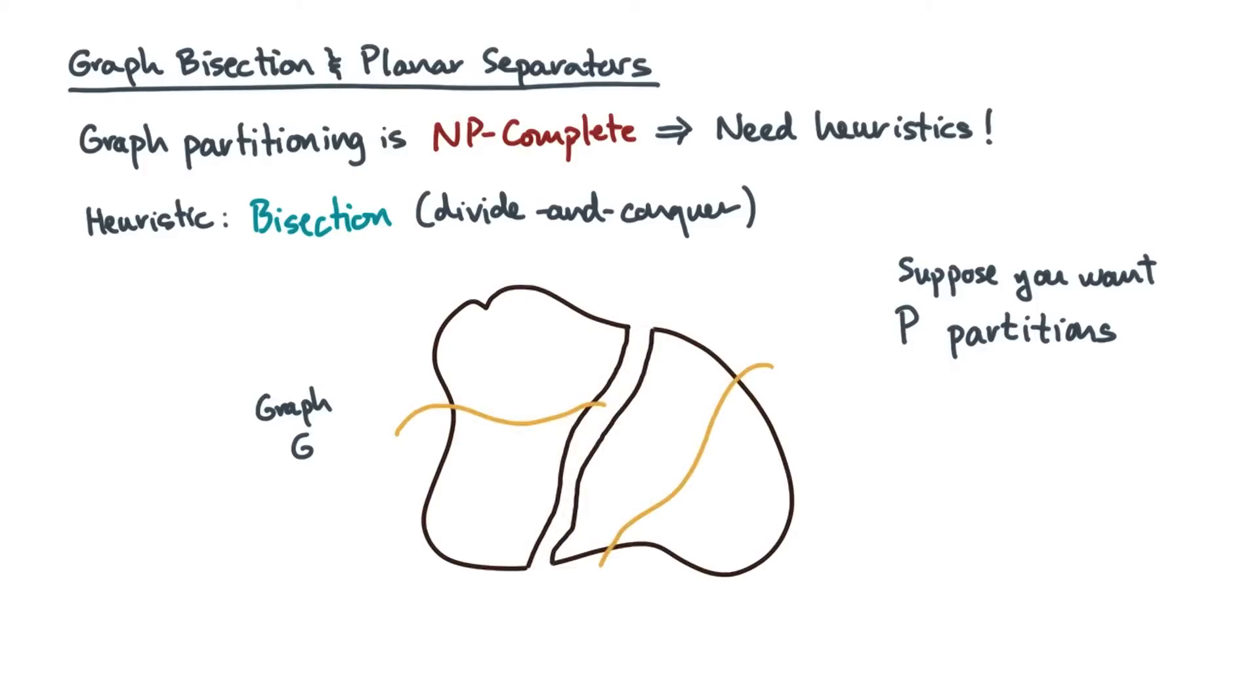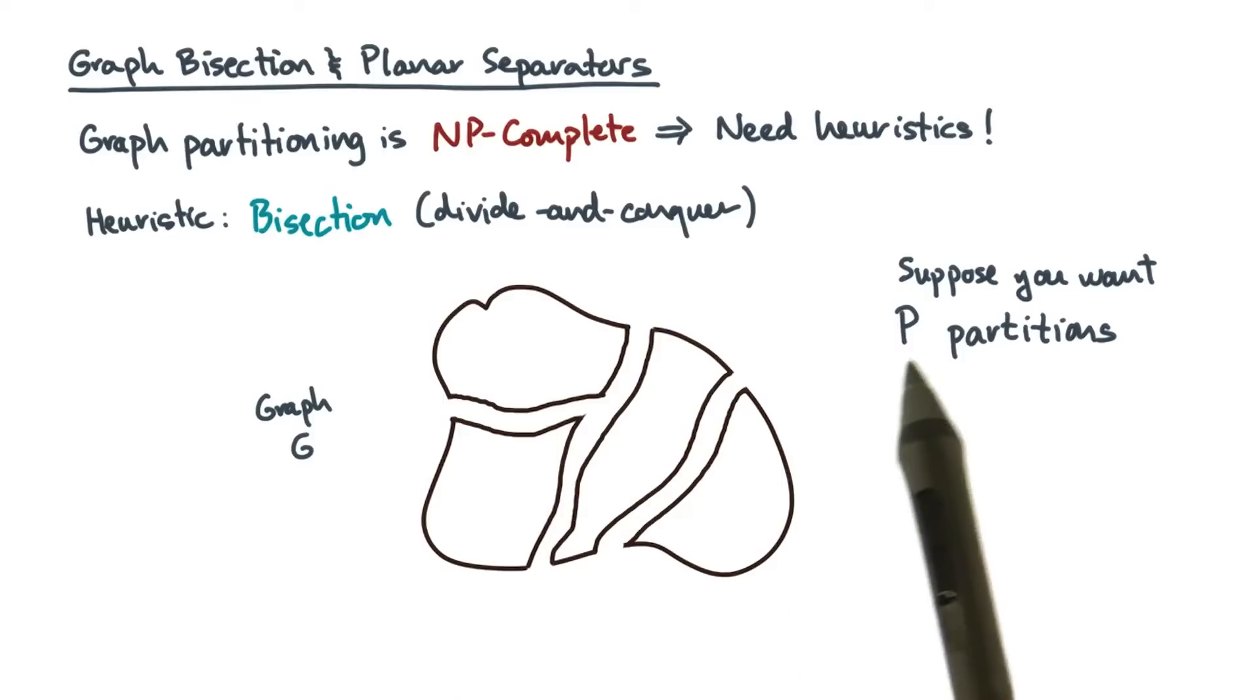Start by first using any algorithm to divide the graph into two partitions. Then divide each half into two. You would repeat this process until you obtain the desired number of partitions.